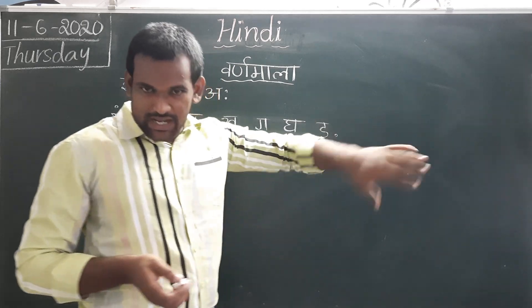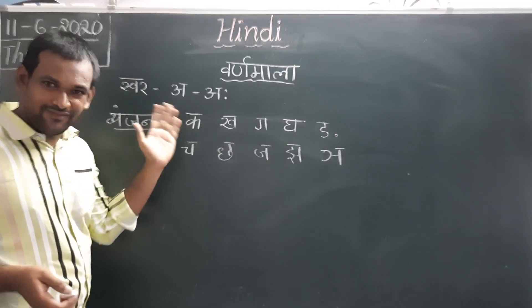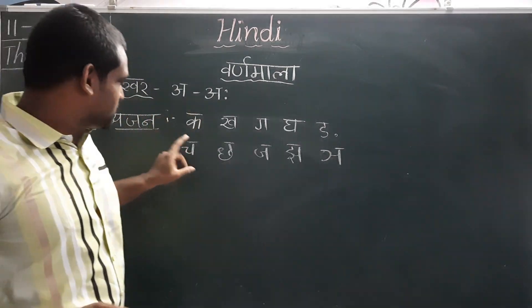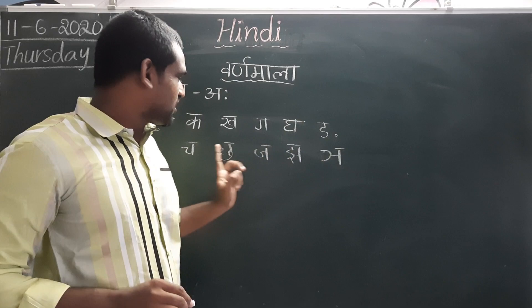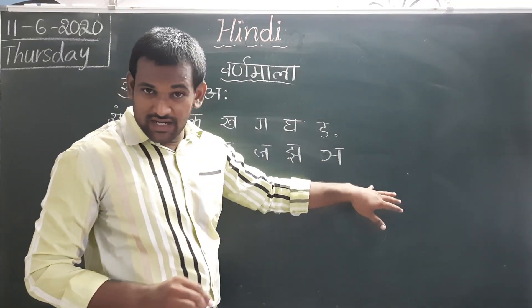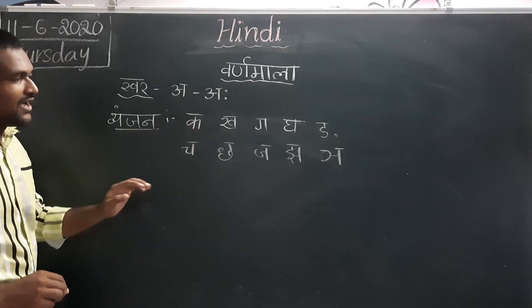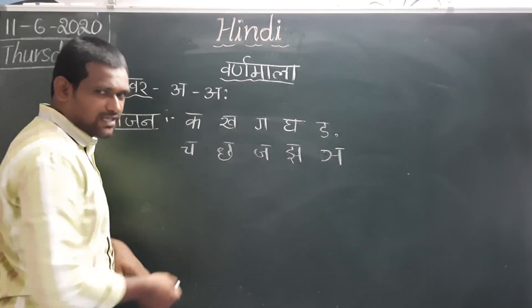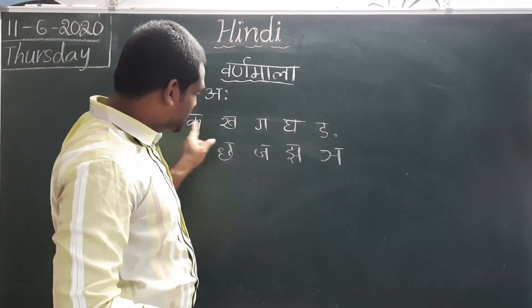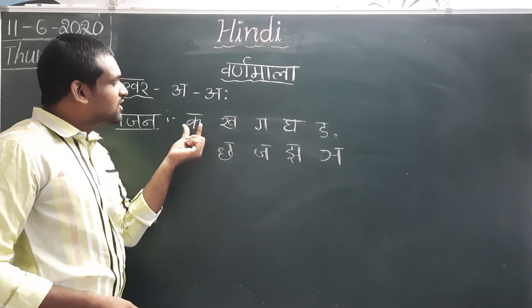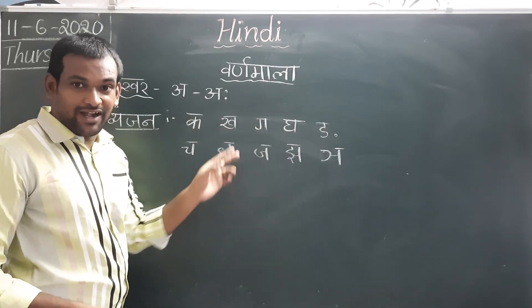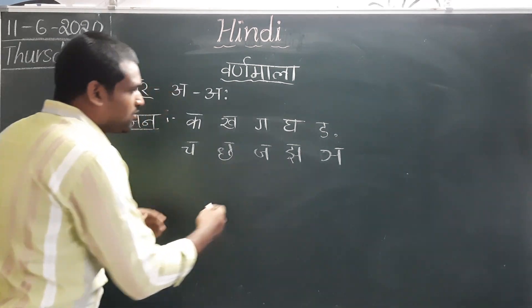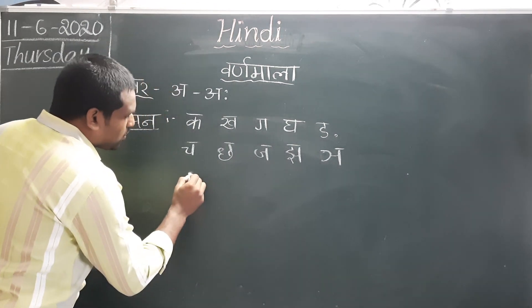Now I am entering into class. In the previous class we discussed about the Swar and some part of the consonants — Ka, Ga, Cha — and the Ka Varga and Cha Varga. Now we are going forward from there.